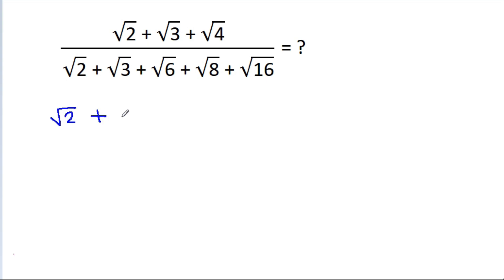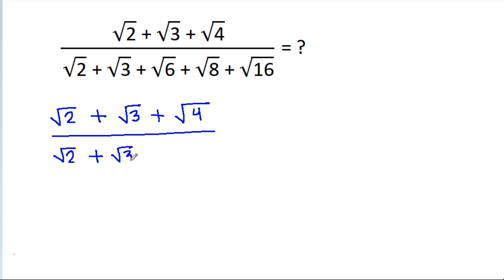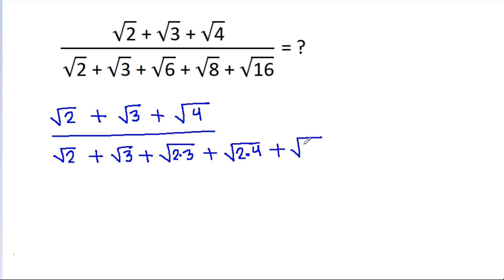We rewrite the denominator terms: 6 is 2 times 3, 8 is 2 times 4, and 16 is 4 times 4. We use the rule that √(a × b) = √a × √b.